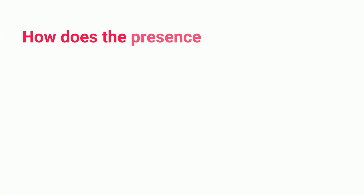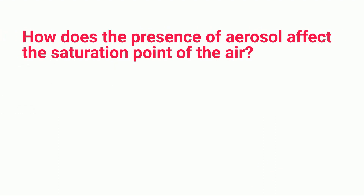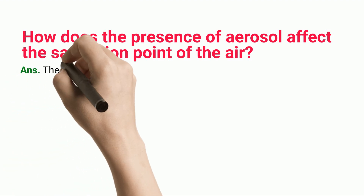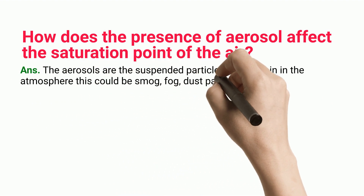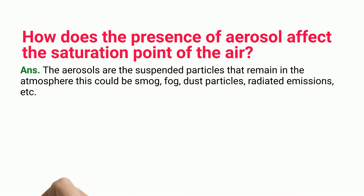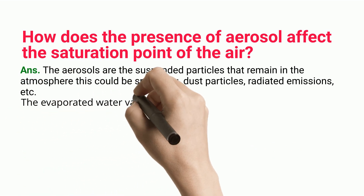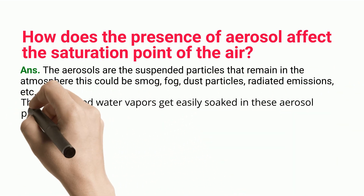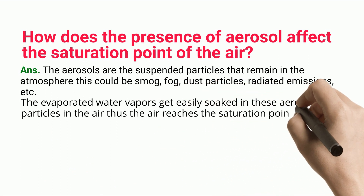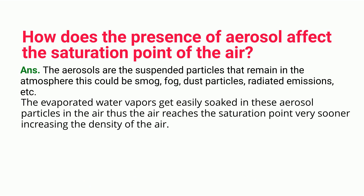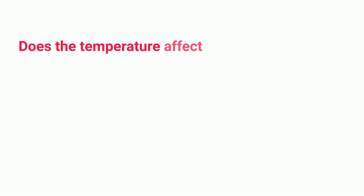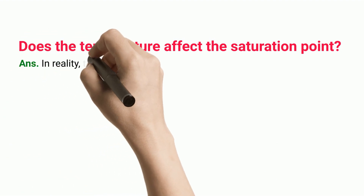How does the presence of aerosols affect the saturation point of the air? Aerosols are suspended particles that remain in the atmosphere — these could be smog, fog, dust particles, radiated emissions, etc. Evaporated water vapors get easily absorbed by these aerosol particles in the air, causing the air to reach the saturation point much sooner and increasing the density of the air.